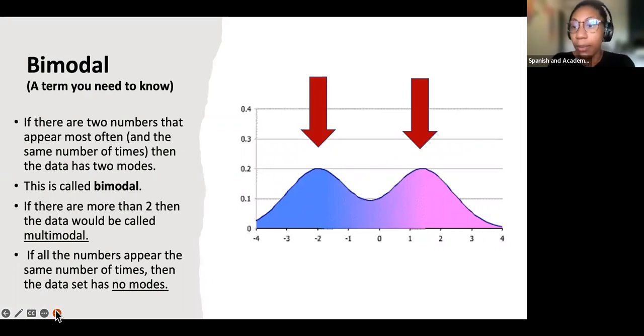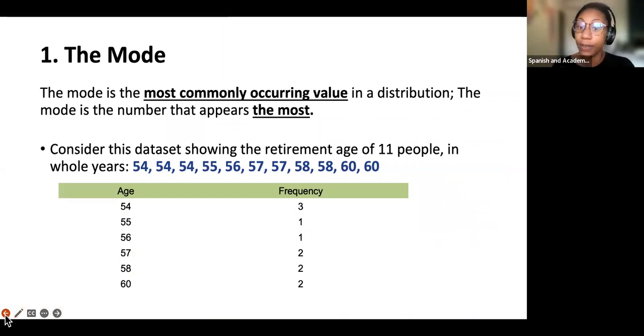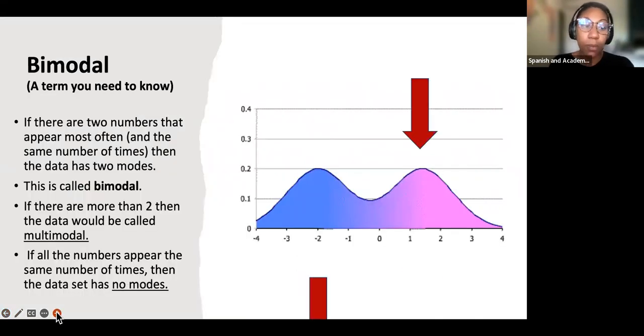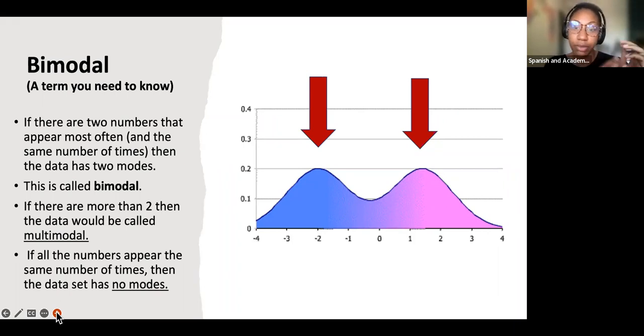You also might see the term bimodal. Bimodal comes from mode. If there are two numbers that appear most often and the same number of times, then the dataset has two modes or bimodal. If we go back to this example, if there were three 54s and three 57s, for example, when we're talking about the years of people showing retirement, then there would be two modes, bimodal, because two of the numbers occur the same amount of times more than the rest of the numbers. If there are more than two modes, then it would be called multimodal. And if all the numbers appear the same amount of times, this would be considered no modes because there's no number that stands out more than the other numbers.